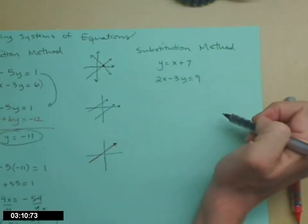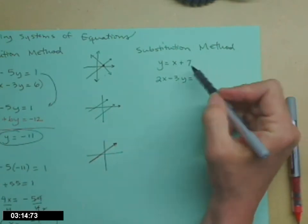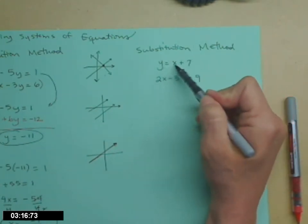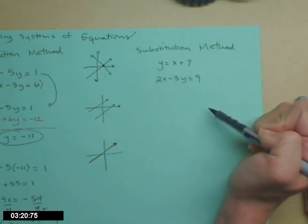So the other method we can use is the substitution method. Usually I will only opt for this one if I have a y equals or an x equals. I have one of the variables completely isolated.